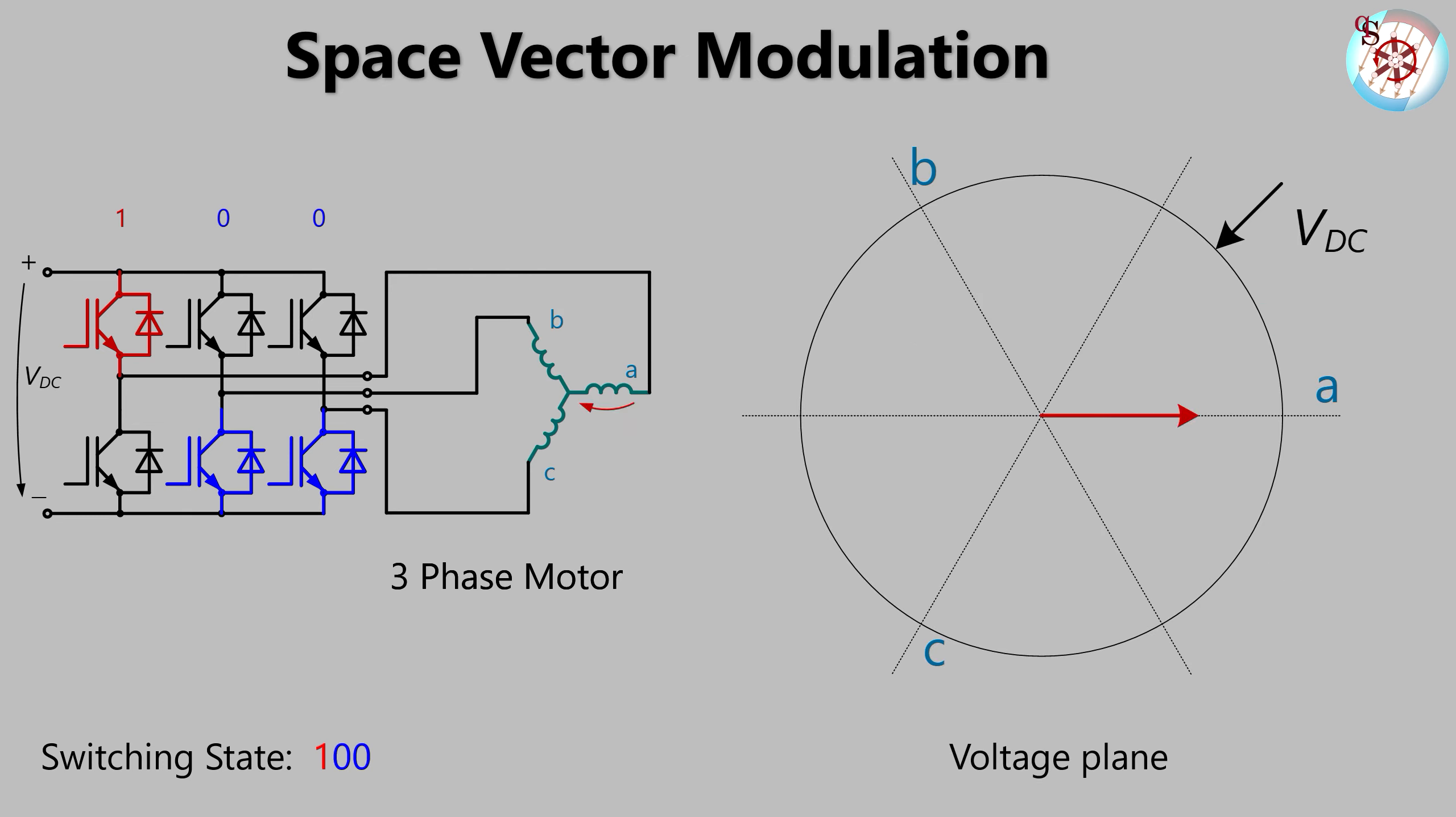Actually we need those signs because we are going to draw these voltages in this voltage plane. Well, positive A voltage means we draw it in positive A direction which is zero degrees. Its value? Two-third DC link of course. Now we have two negative one-third DC link voltages for B and C. Since B positive has an angle of plus 120 degrees, the negative B direction is minus 60 degrees. The same goes for C accordingly. So we have these two negative one-third voltages.